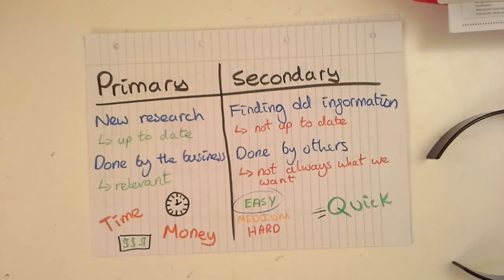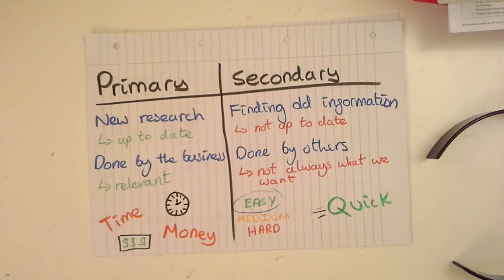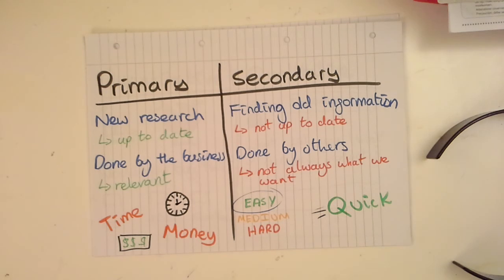Back to primary research — it's normally done by us, by the business. That means the information collected is hopefully going to be relevant, unlike secondary research, and it's hopefully going to answer whatever question we want to answer. For example, we might ask: why are people buying pineapples from our competitor? We go out, do a survey, look at their prices, and find out it's because they're so much cheaper than us. We've answered that question.